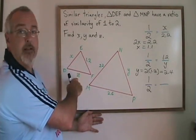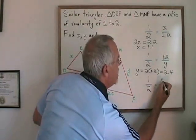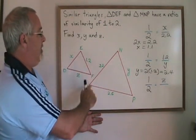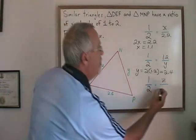Finally, looking for Z. Z is an unknown in the smaller triangle, so it goes on the top in the proportion with the one. And the side that is similar in the larger triangle to the side Z is this side here that is 2.6.